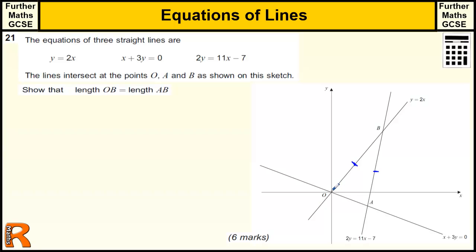So to do that, we really need to work out, well, we know that point O is (0,0), but we need to work out the coordinates of B and the coordinates of A.